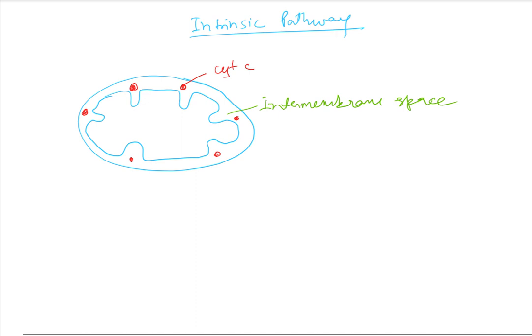In the intrinsic pathway, there is leakage of cytochrome C out of the mitochondria into the cytoplasm, where it combines with apoptosis-activating factor one — Apaf-1.